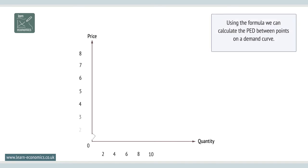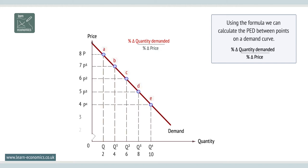By using the formula percentage change in quantity demanded over percentage change in price, PED can be calculated between points on a demand curve.